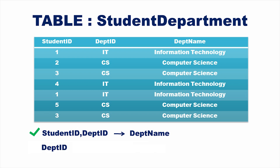Now let us check whether department ID alone determines department name as a functional dependency. From the table, we can see that department ID uniquely determines department name. That means department ID determines department name is also a functional dependency on the student department table. So department name is functionally dependent on both the composite key and on the subset — department ID alone.